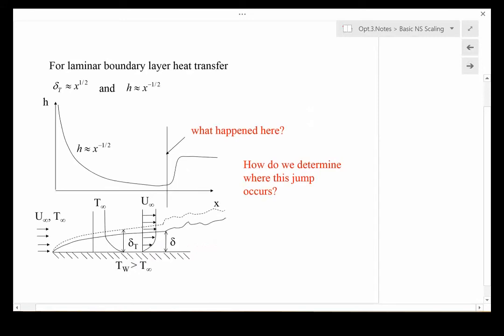For a laminar boundary layer, the thermal boundary layer thickness grows like x^(1/2). The thermal boundary layer grows from the leading edge like δ_T ~ x^(1/2). If the heat transfer coefficient looks like k/δ_T, then h would look like x^(-1/2).